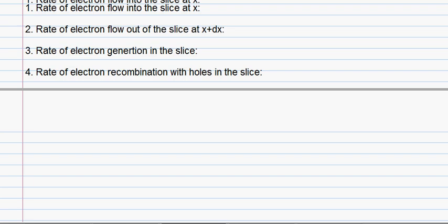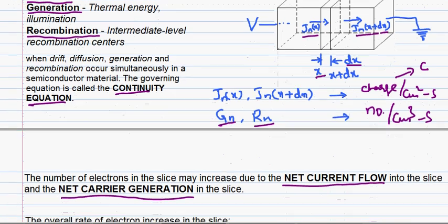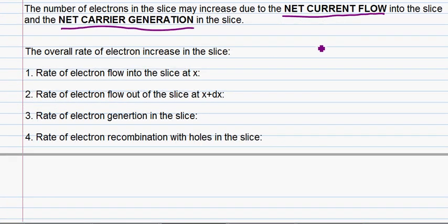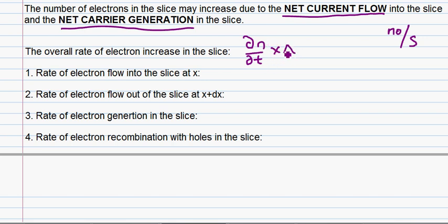Similarly, in the case of our derivation, the net current flow is the difference between the input and the output current flow of the slice, and the net carrier generation is generation minus recombination. Looking at the overall rate of electron increase in the slice, ∂n/∂t is the electron concentration increase per time. Multiplied by the volume of the slice, A times dx, we get the net number of electrons increasing per time.